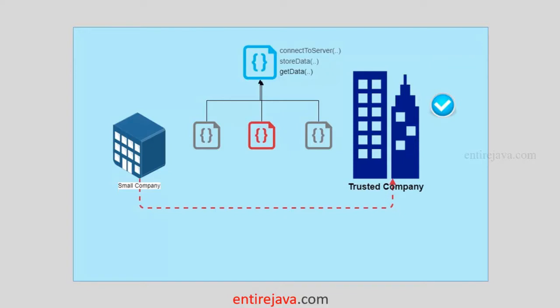Your company will use one of these implementations from your application logic to successfully connect to the trusted company servers. Now we're going to see where constructor injection comes into picture in this scenario. We're not really going to connect to any servers — we'll have a simple application that illustrates the scenario. The main purpose is to understand what constructor injection and dependency injection are in a real-time scenario. Try to keep this image in mind while I walk you through the code in the next video.